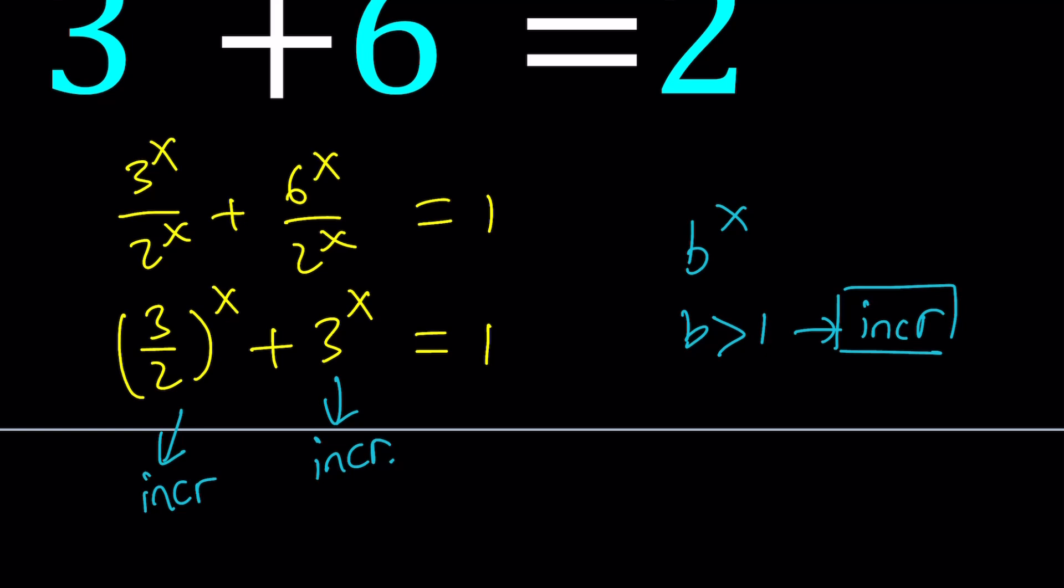So we have an increasing function equals a constant, which means we have something like this. And obviously this is going to be curvy. And then that equals a horizontal line. And of course, they are supposed to intersect at a single point. But the question is, how do you find that point?